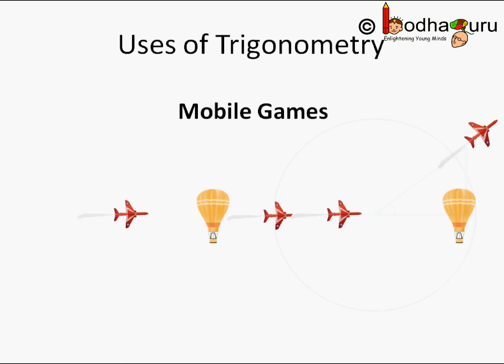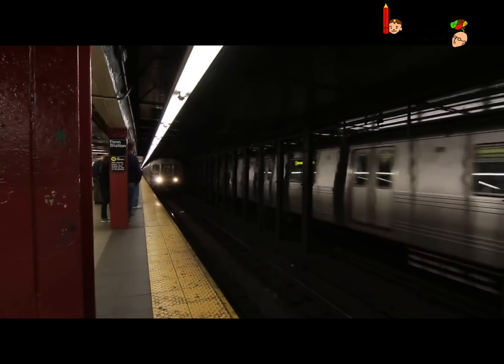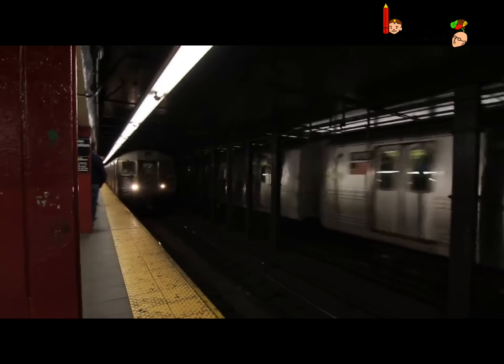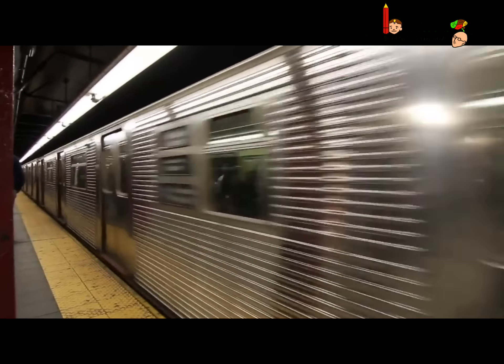There you see a triangle on the right side that is formed, and using that while designing the game, we find out at what angle the direction of the plane should be changed. Trigonometry is also used during various construction design.